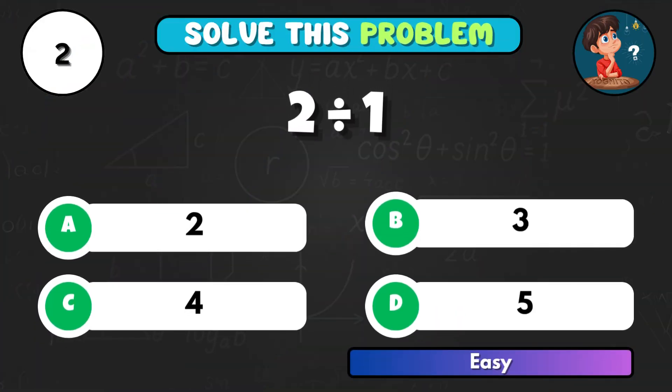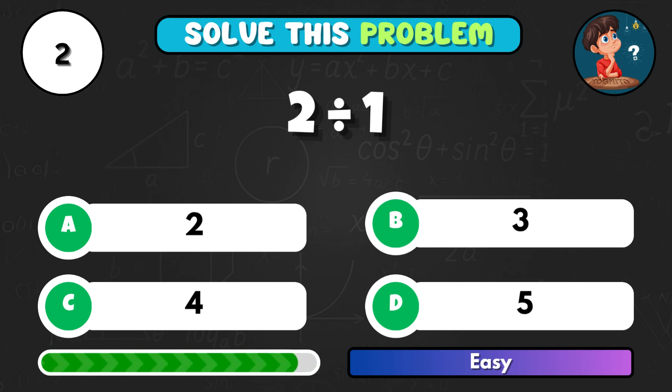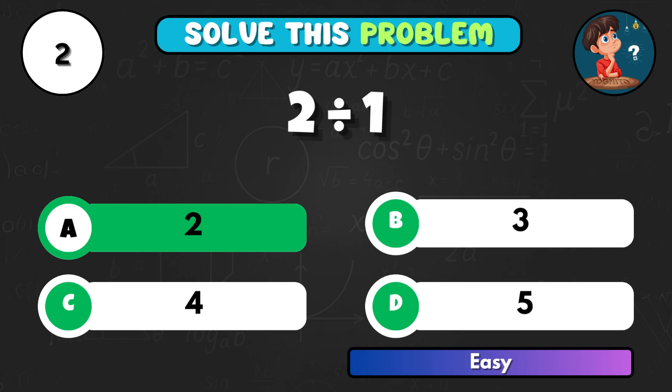You have two things shared between one person, how many does each get? That's A giving 2.